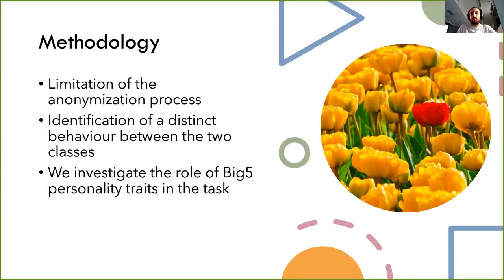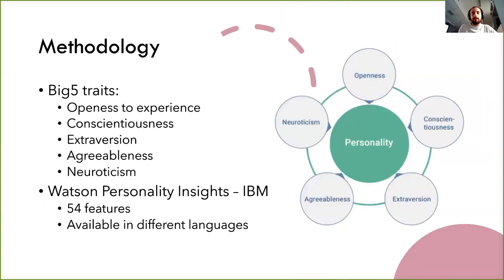So we started thinking about what could be challenging, and our goal was to identify a set of features that were not used so far to distinguish and discriminate the two groups of people: fake news spreaders and non-spreaders. What we did is investigate the role of the Big Five personality traits in this task. The Big Five is a set of personality traits that a person can be linked to, involving things like openness to new experiences, organization shown in daily life, and whether a person is friendly or not.